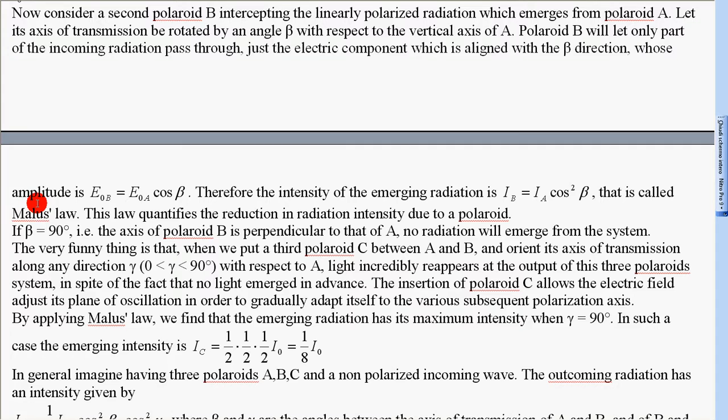The amplitude is E_0b = E_0a cos β. Therefore, the intensity of the emerging radiation is I_b = I_a cos² β. This is called Malus' law. The law quantifies the reduction in radiation intensity due to a polaroid.